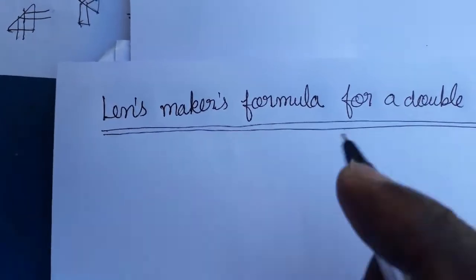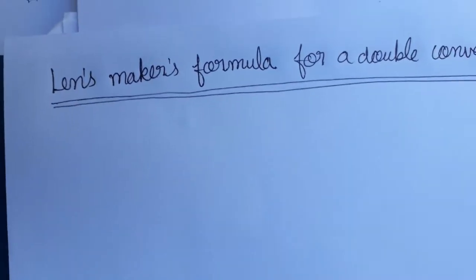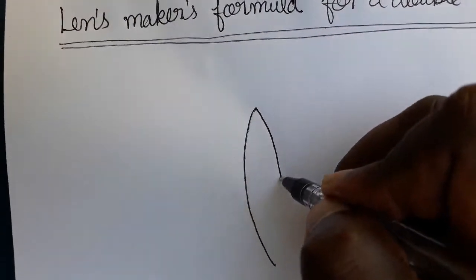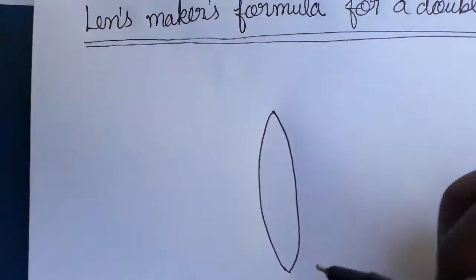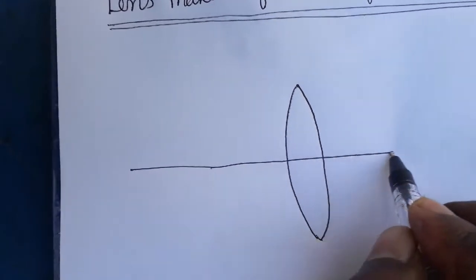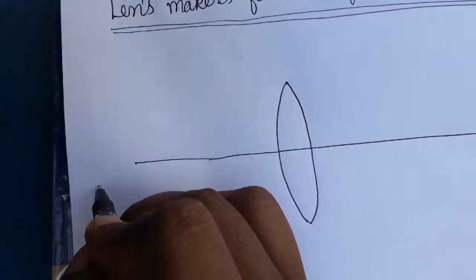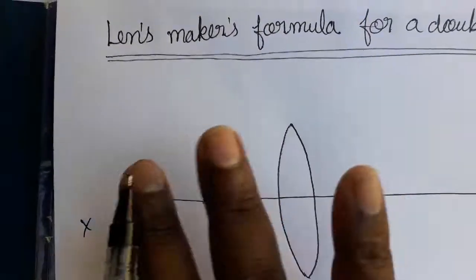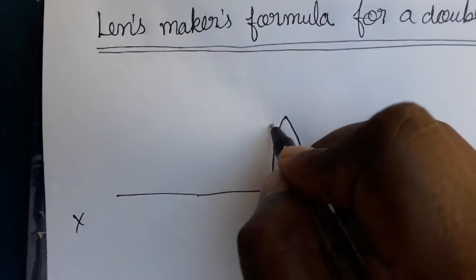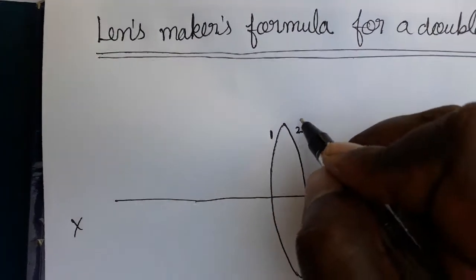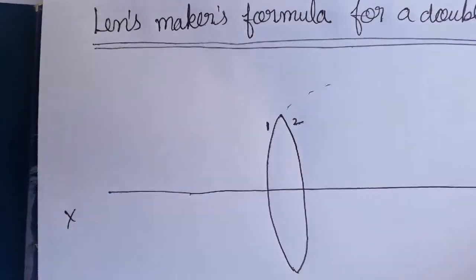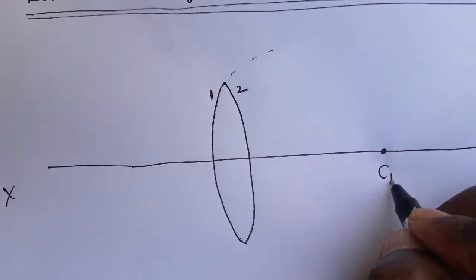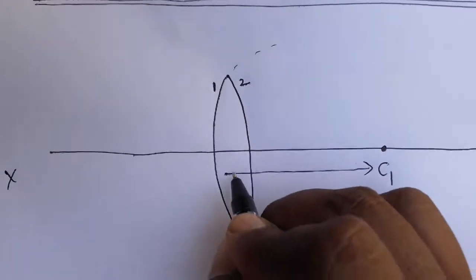Hello students, today we are going to see the lens maker formula for a double convex lens. This is the principal axis, going from left side to right side. The first surface has a center of curvature C1, and the radius of the first surface is R1.